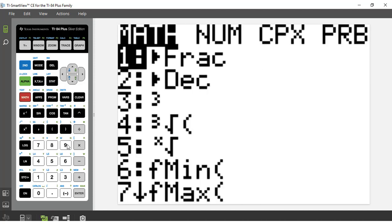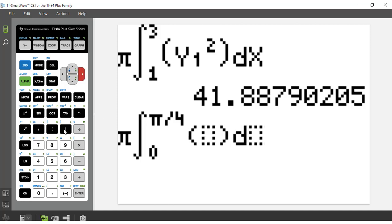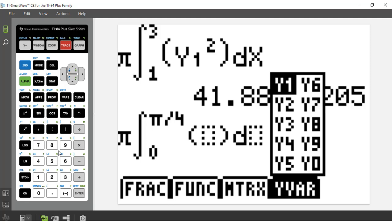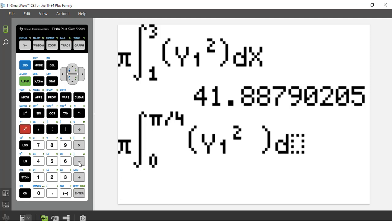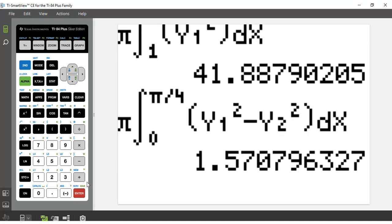Math 9 from 0 to pi over 4, alpha trace that's y1 squared minus alpha trace y2 squared, then put here dx enter. This will be the answer you are looking for.